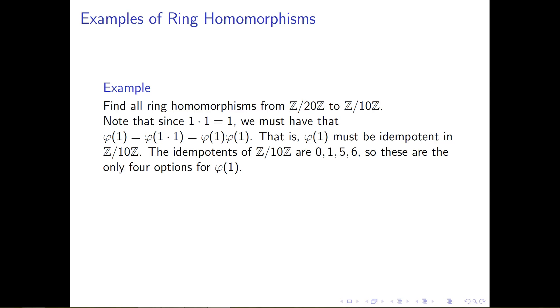And being an idempotent element of a ring is a very specific property. So this is going to restrict the number of possible places that we could send the number 1.